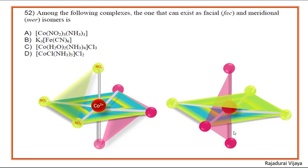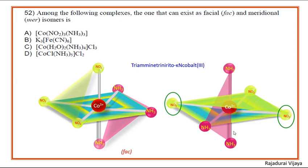In the facial isomer, the NO₂ ligands are arranged at the corners of one triangular face of the octahedron, and the amine ligands are arranged at the corners of the opposite triangular face. In the meridional isomer, the three NO₂ ligands are arranged in a semicircular form starting from one apex to the opposite apex of the octahedron; similarly, the amine ligands are arranged in a semicircular way from one apex to the opposite apex.